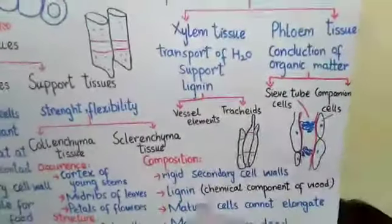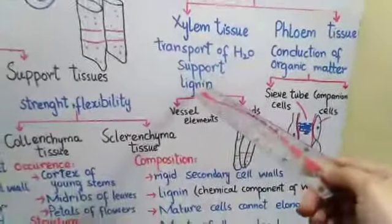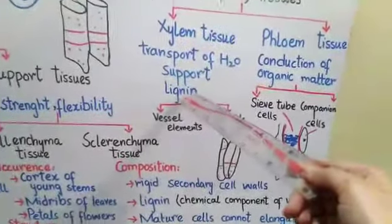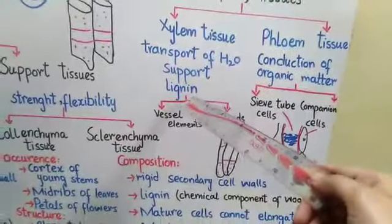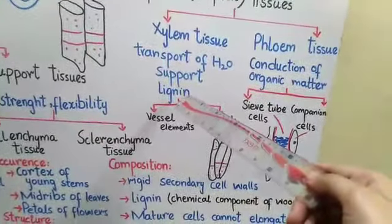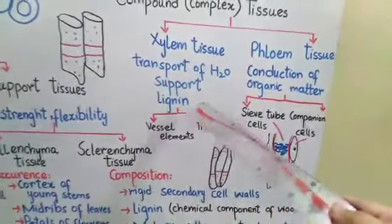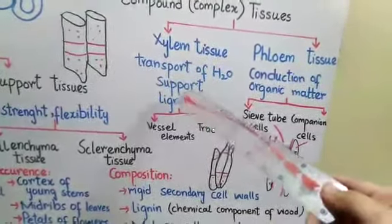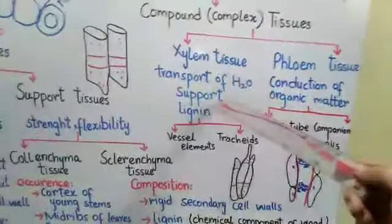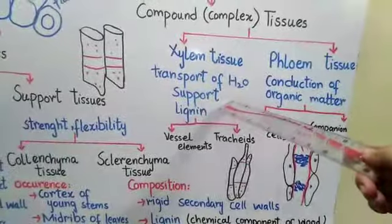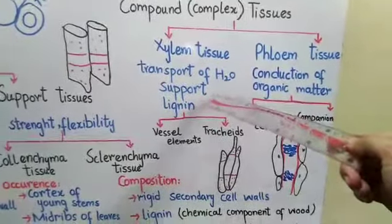Due to the presence of lignin, certain chemical components are also present in the xylem. The secondary wall is thick and rigid, which is why xylem tissue also provides mechanical support to plants.